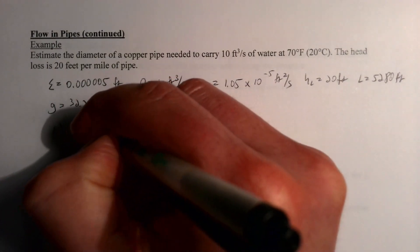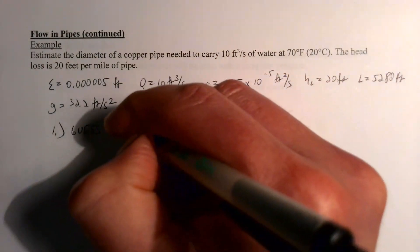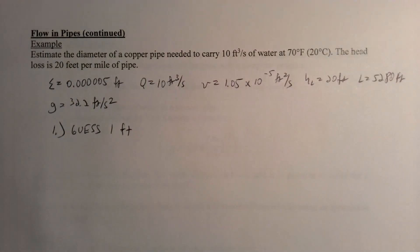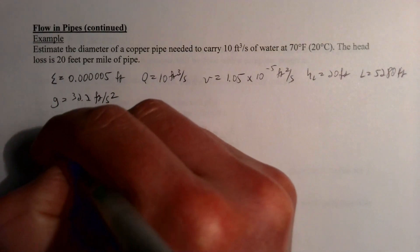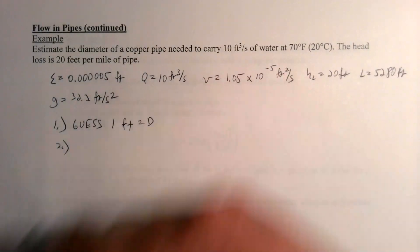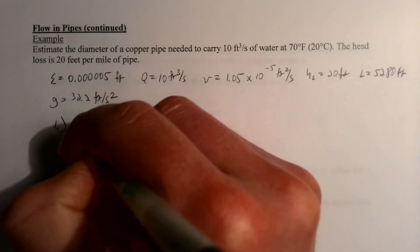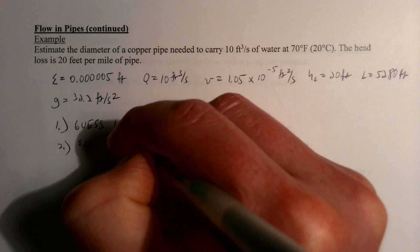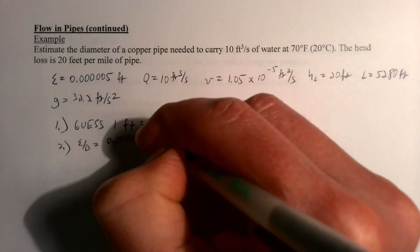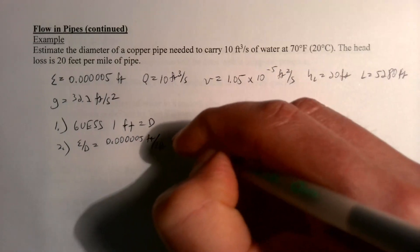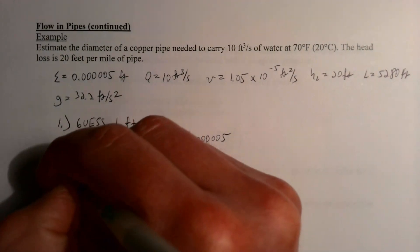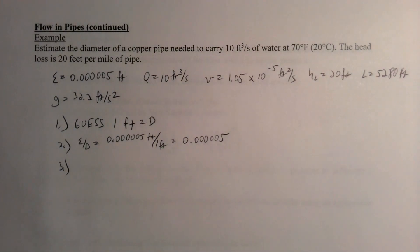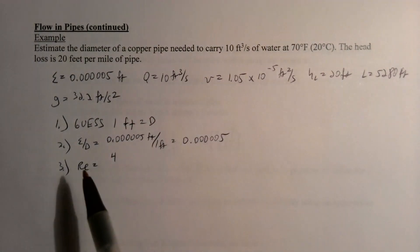Following the iterative procedure, we start by guessing D = 1 foot — a nice round number. From that we can compute the relative roughness: e/D = 0.000005 ft / 1 ft = 0.000005. We can also compute the Reynolds number. Rearranging the Reynolds number to use flow rate Q instead of velocity V gives Re = 4Q / (π D ν).